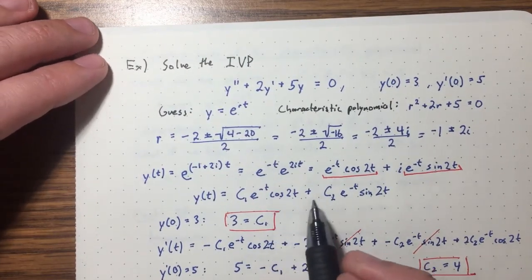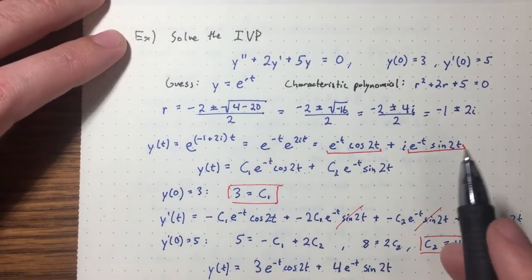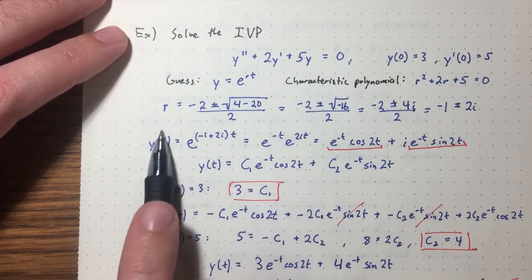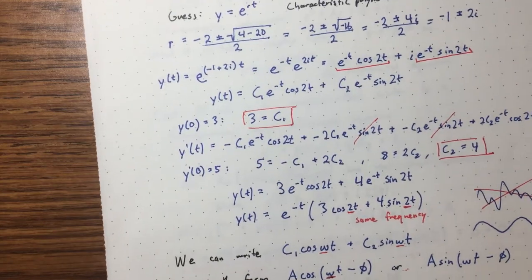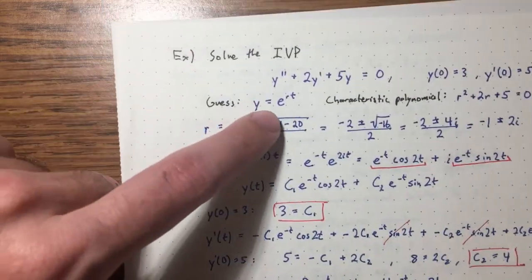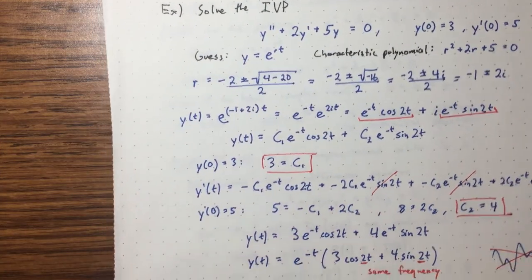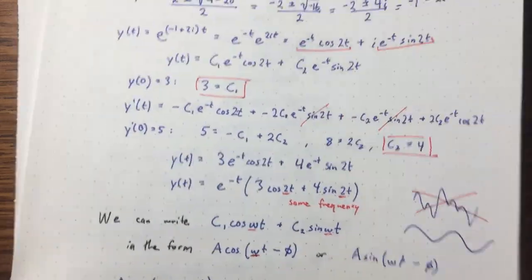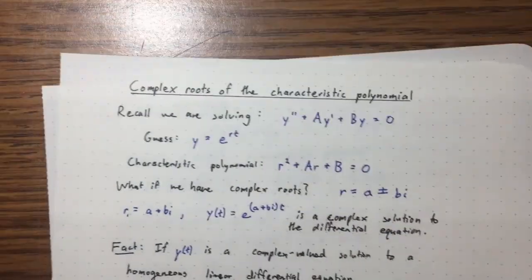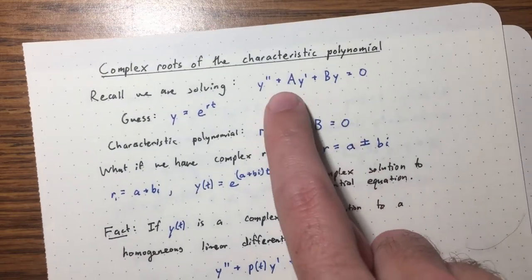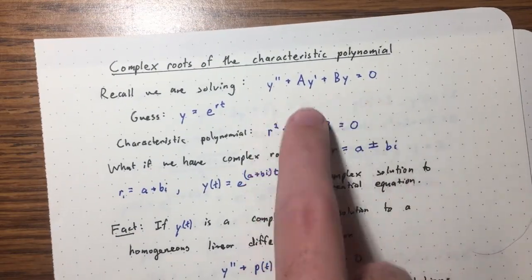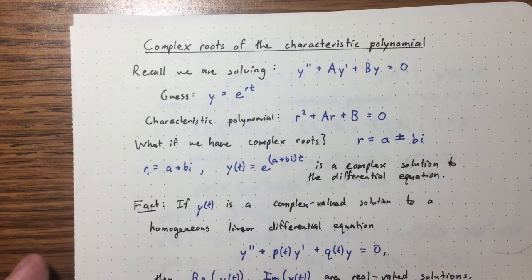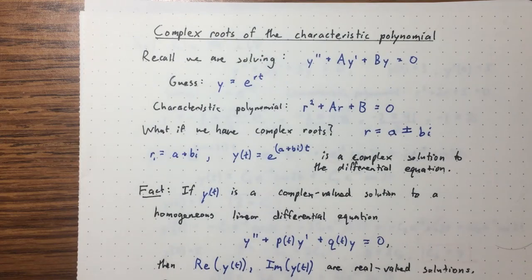That's enough for this lecture. It's pretty cool that we were able to sketch a fairly accurate graph of this complicated-looking function. It's really quite nice how sines and cosines appear in these solutions — the link is the complex exponential and Euler's formula connecting exponentials with sines and cosines. In the next lecture, we'll talk about what to do in the case of a repeated real root.